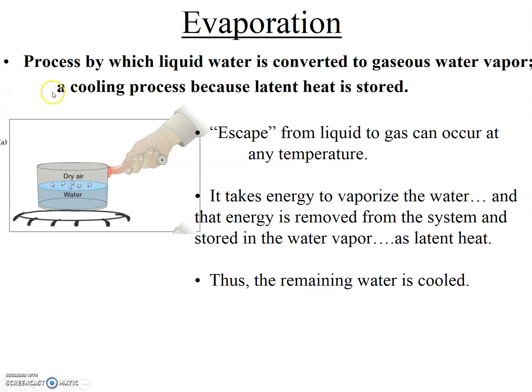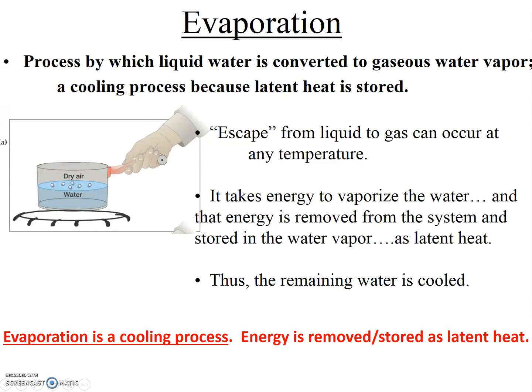Look at the definition again, especially the second phrase: evaporation is a cooling process. This is very important — we discussed it back when we addressed temperature and global temperature patterns in Chapter 4. When water evaporates, the remaining water is cooled because it took energy to break those hydrogen bonds. This energy is called the latent heat of vaporization, and that energy will be released again when the water recondenses. Thus condensation is a warming process. Simply remembering that evaporation is a cooling process will take you a long way. To help you remember that, think of your body sweating when it gets hot — our bodies use evaporation to cool us.